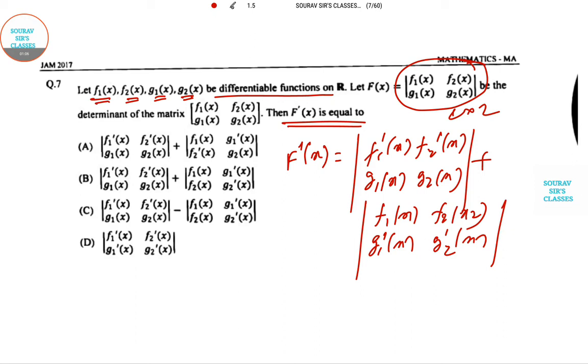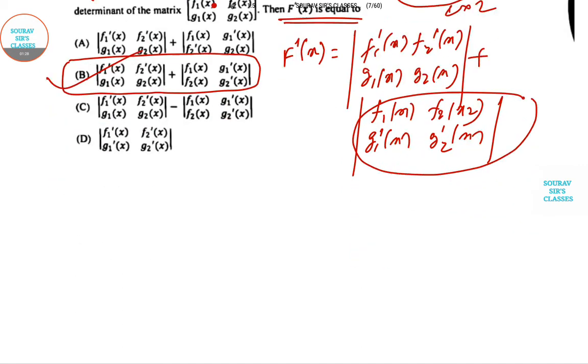Now afterwards, this one is not changing but these two can be interchanged. So F1, F2 gonna come over here and G1, G2. If you see the options then B is exactly matching with the structure. By transposing, the structure doesn't matter in case of determinant, so B is the answer.